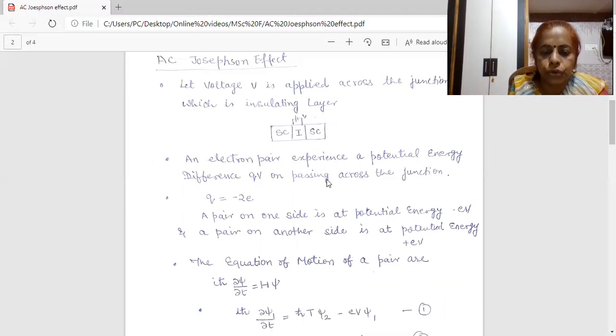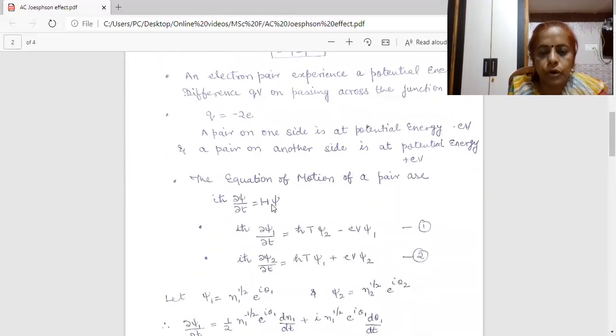So, we can consider that an electron on one side is at potential energy minus EV. Then an electron on another side will have a potential energy plus EV. Now, I am writing the Schrödinger equation of motion. For this pair, the general form of Schrödinger equation, we know iℏ ∂ψ/∂t = Hψ. Here, H is the energy and we can express our energy to be equal to ℏω. Here, I am writing ℏT. What is T? T is the transfer interaction.